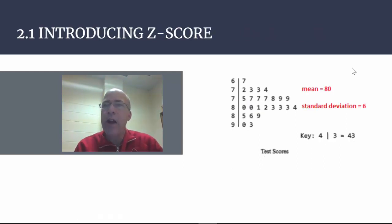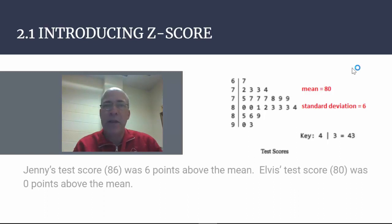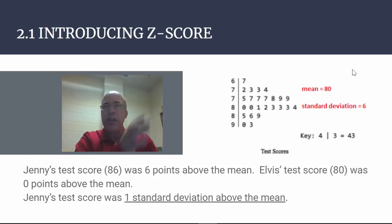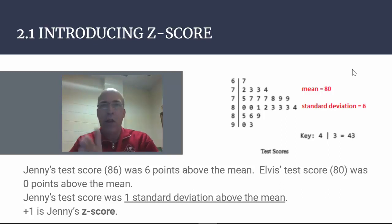We also try to assess how far above someone is from the mean. With a mean of 80 and a standard deviation of 6, Jenny was six points above the mean and Elvis was zero points above the mean. Another way to say it is that Jenny's test score was one standard deviation above the mean — she was six above — while Elvis was right at the mean. Plus one is then called Jenny's z-score. The z-score is a measure of the number of standard deviations you lie above or below the mean.